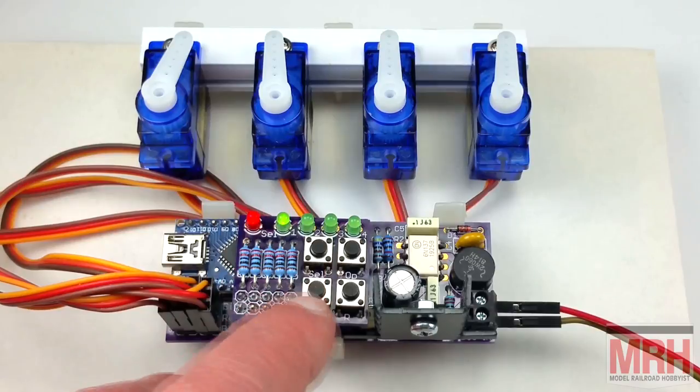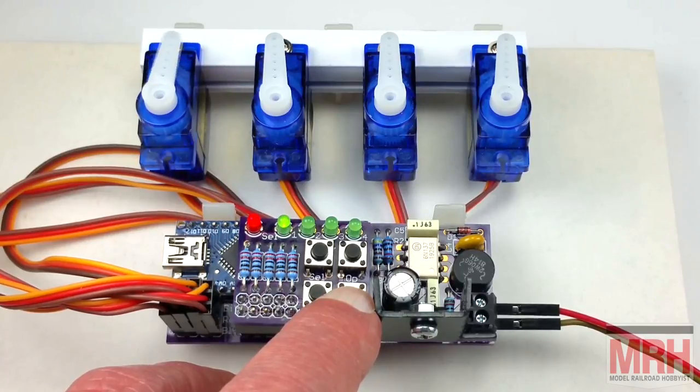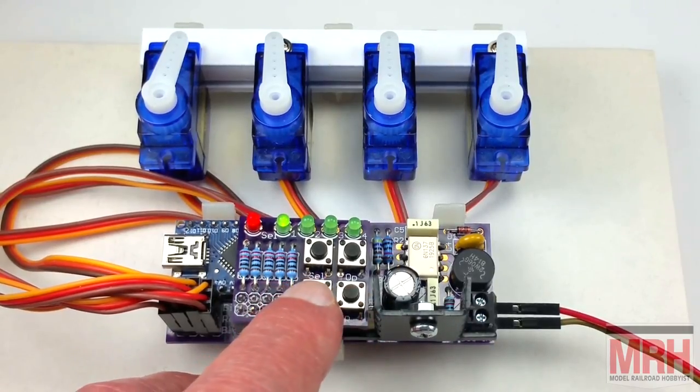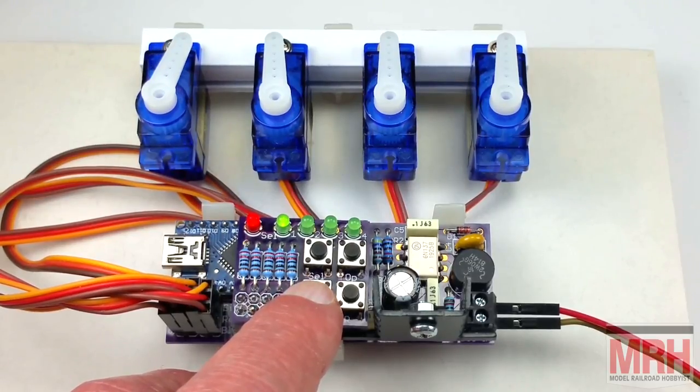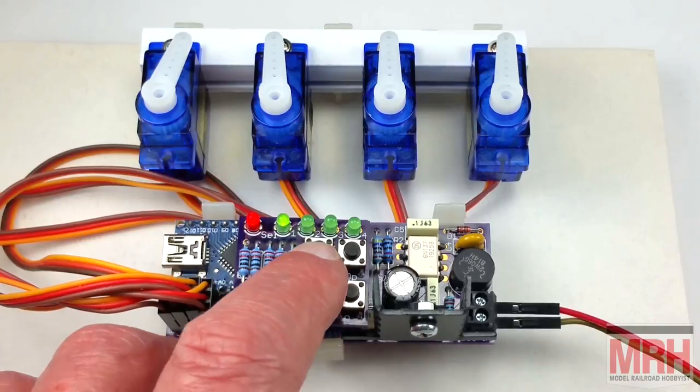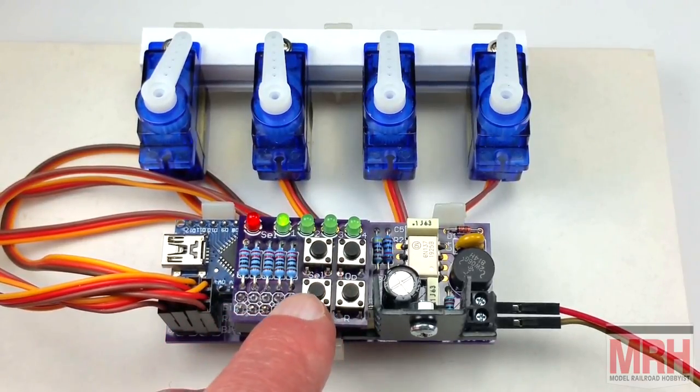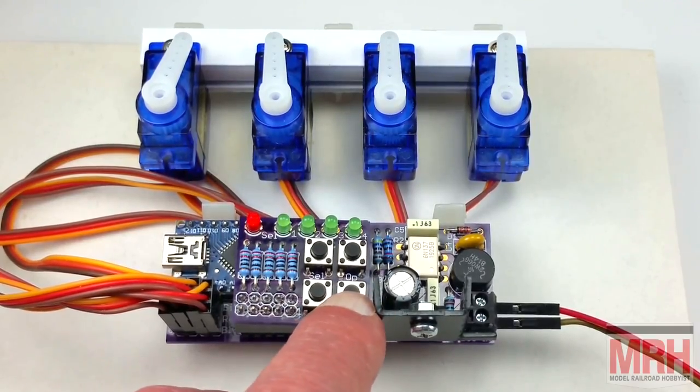The servo now moves at its set rate. We can increase the rate by pressing the right button which will get faster and faster. When it reaches the maximum rate it will stop. We can then reduce the rate with the left button. When we're happy we stop again. Press select. The LED flashes, we're ready to save the settings. Left to lose them, right to retain them. Press select again.